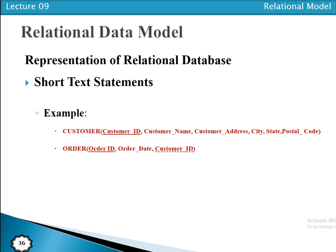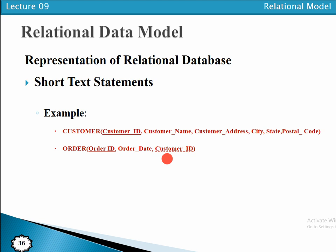In the short text statement method, we write the relation name followed by the list of attributes enclosed in parentheses separated by commas. For example, Customer is a relation where CustomerID is the primary key (underlined), followed by CustomerName, Address, City, State, and PostalCode. For the Order relation, OrderID is the primary key and CustomerID is used as a foreign key, which is represented with a dashed underline.